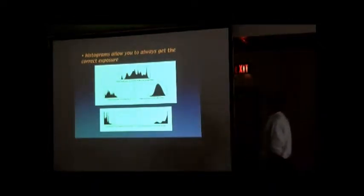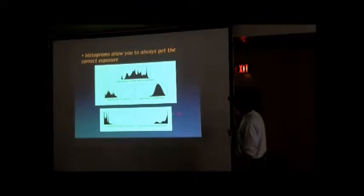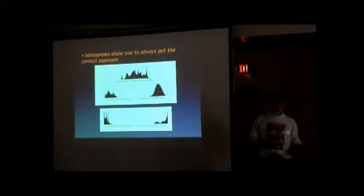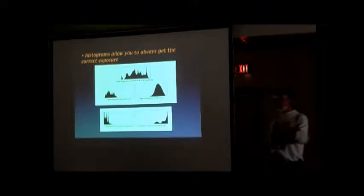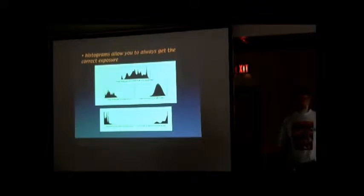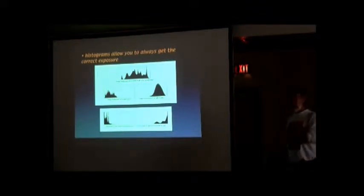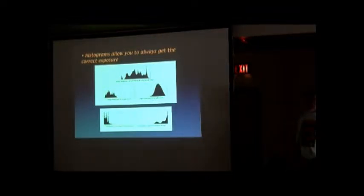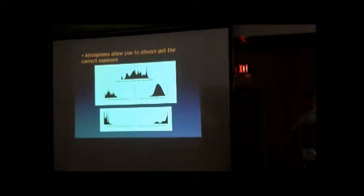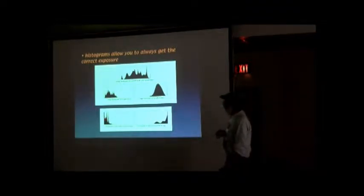Here's the histogram — half your image is pure white. There's nothing there; no information there for you to deal with. It's gone. It was never recorded. So if you see this or this, you need to do something. Most of our cameras are sophisticated enough that this shouldn't happen. If it does, something's really screwy, because the camera's meters are better than that.